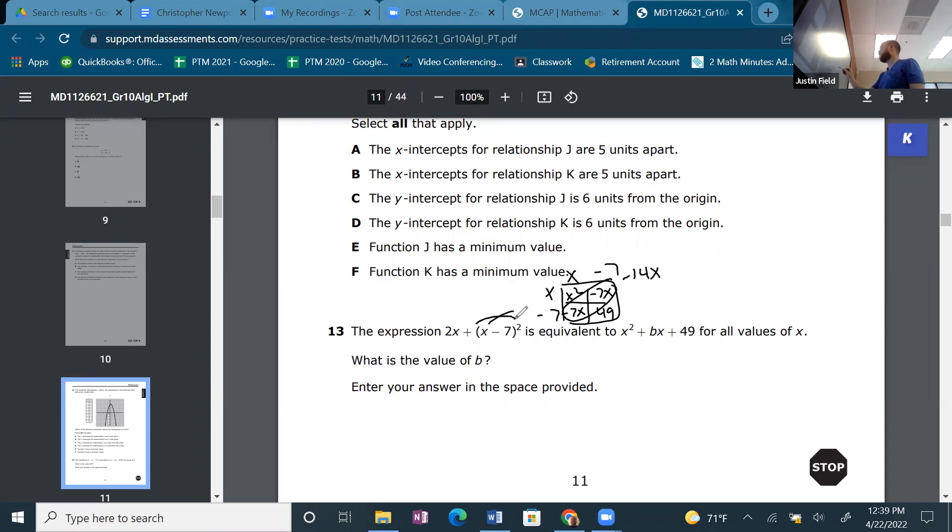So that's what (x - 7)² is. So 2x + x² - 14x + 49, adding the components from the table. Now I'm going to combine the like terms, which are just these two. So x² - 12x. Look, I figured it out. The answer is -12, negative 4.